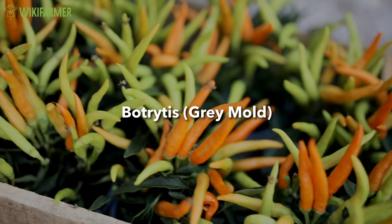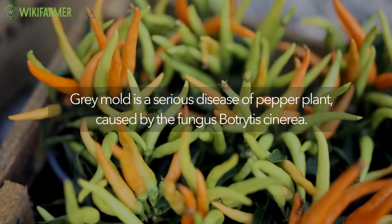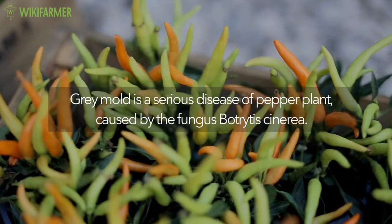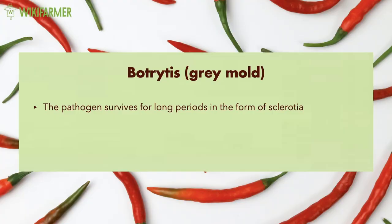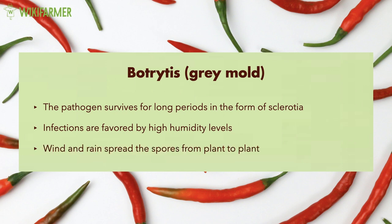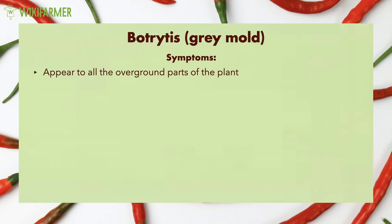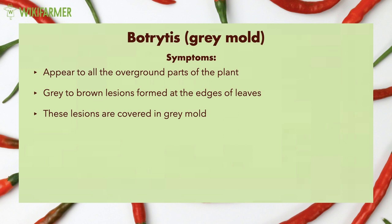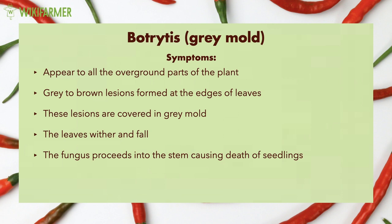Botrytis Gray Mold. Gray mold is a serious disease of pepper plants caused by the fungus Botrytis cinerea. The pathogen is capable of surviving for long periods in the form of sclerotia. Infections are favored by high humidity levels while wind and rain spread the spores from plant to plant. Symptoms may appear on all the overground parts of the plant. Symptoms include gray to brown lesions forming at the edges of leaves, after which these lesions are covered in gray mold. The leaves wither and fall, and the fungus proceeds into the stem causing death of seedlings.